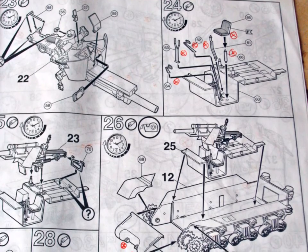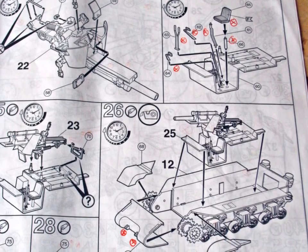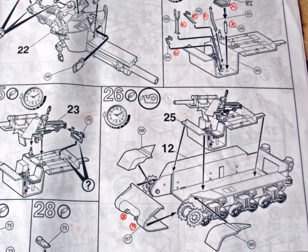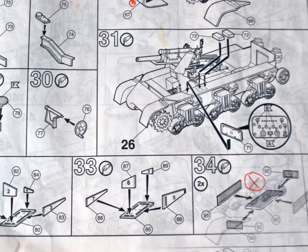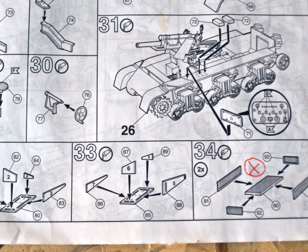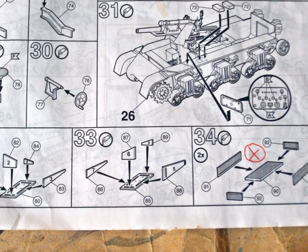The instructions continue with the floor plate of the driver's and the fighting compartment. You will have noticed all the red marks I added to a couple of steps. These are indications for things I want to change. The gun assembly is attached in step 26, and that's why I consider instructions as suggestions. I'll build the fighting compartment in an order that makes sense to me.